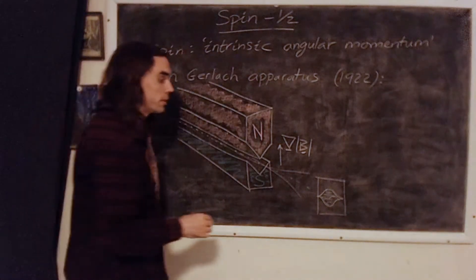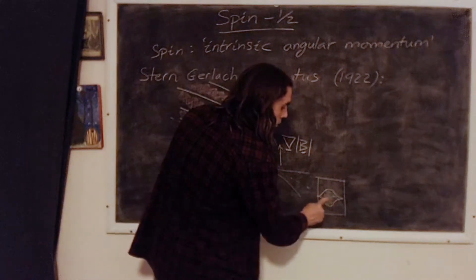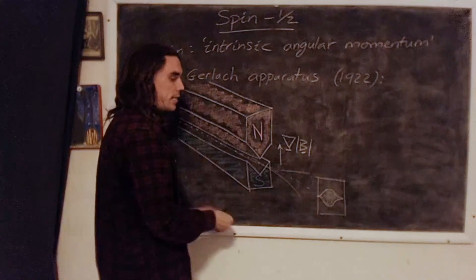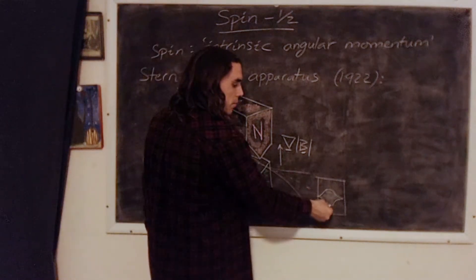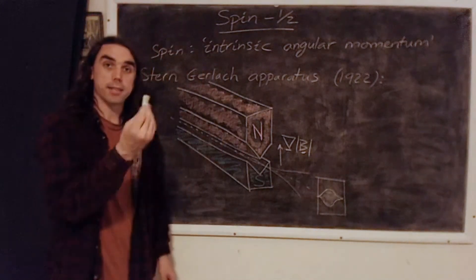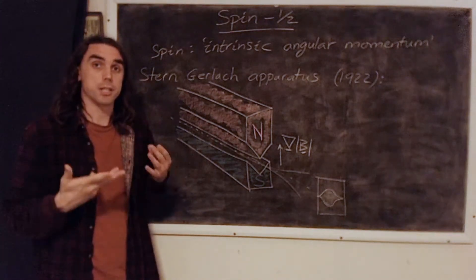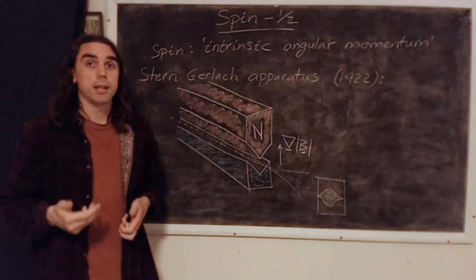But what they found when they did the experiment is that it didn't look like this at all. In fact, the spread looks like something like this. That is, every electron either goes up or down, and there's nothing in between. It's quantized. It's a very clear example of the quantization of quantum mechanics, recalling that quantum means discrete.